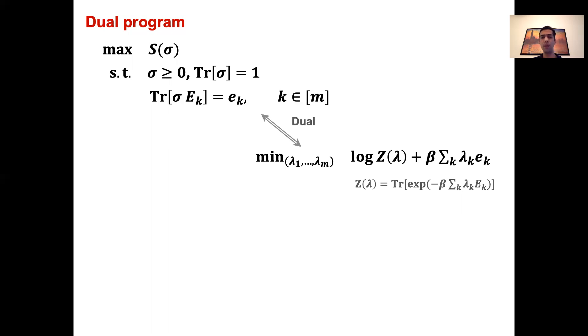It's easier to analyze this robustness if we instead look at the dual of this optimization. Here the variables lambda are the Lagrange multipliers, and the objective function is a sum of the log of the partition function plus a linear term. As long as we have the exact values of the local expectations e_k, the output of this dual program can be shown to be the interaction coefficients μ_k. But again, the question is, what happens when we use the estimated values?